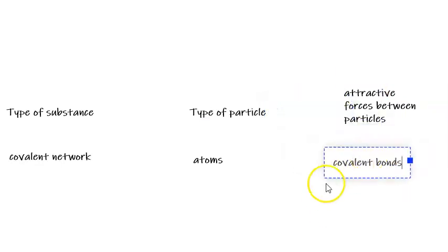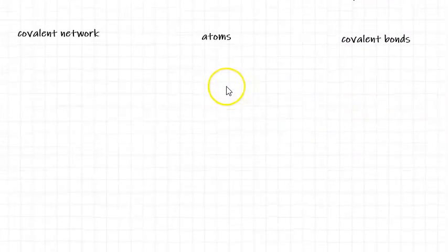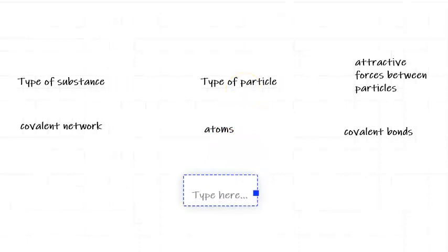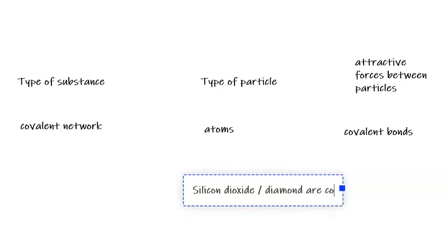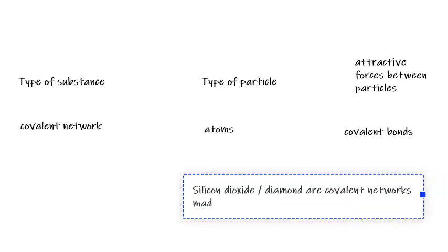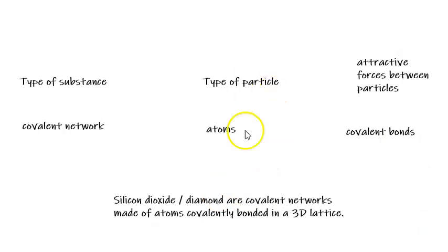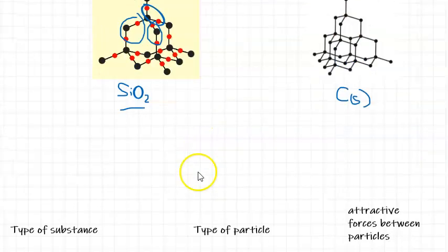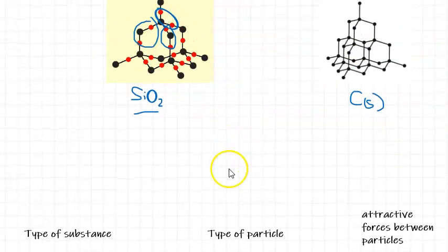If we needed to describe the structure and bonding of a 3D covalent network, we could say that silicon dioxide, or equally we can say diamond, are covalent networks made of atoms covalently bonded in a 3D lattice. That's how we would describe what we've just gone over here in words. We've got those silicon or diamond are made up of atoms covalently bonded together in a 3D lattice. That describes the structure and bonding of these covalent networks.